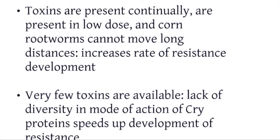What are some of the pitfalls? Toxins are present continually, and in the case of BT hybrids expressing proteins toxic to corn rootworms, they are also present in very low doses. This drawback, combined with the fact that corn rootworm larvae do not move large distances, increases their rate of resistance development. Another pitfall is that there are very few toxins available in BT corn hybrids and a general lack of diversity in mode of action of these cry and other BT-derived proteins, which also speeds up development of resistance.